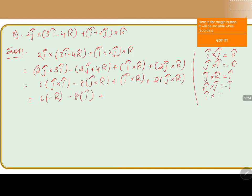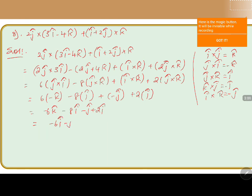So i cap cross k cap equals minus j cap, that is minus j cap. The next one is plus 2 into j cap cross k cap, which is nothing but i cap. So 6 into minus k cap can be written as minus 6k cap, minus 8i cap, minus j cap, plus 2i cap. So we can write it as minus 8i plus 2i equals minus 6i, minus j, minus 6k cap.